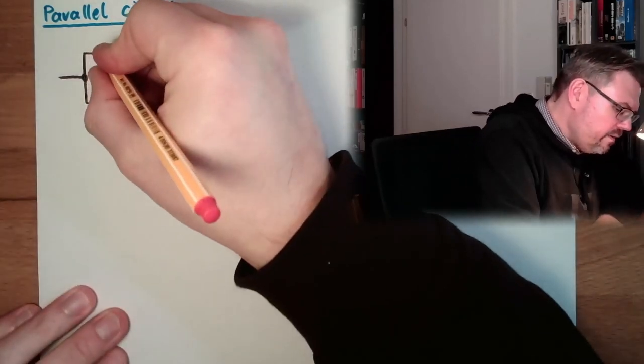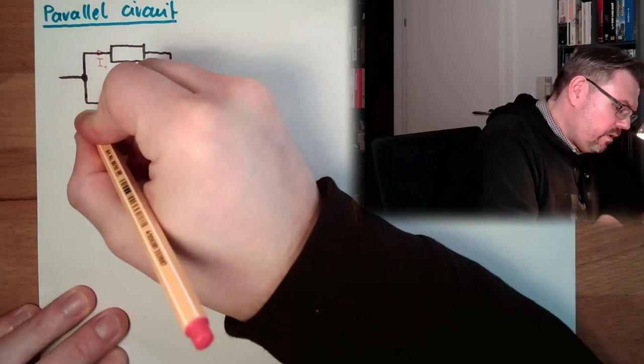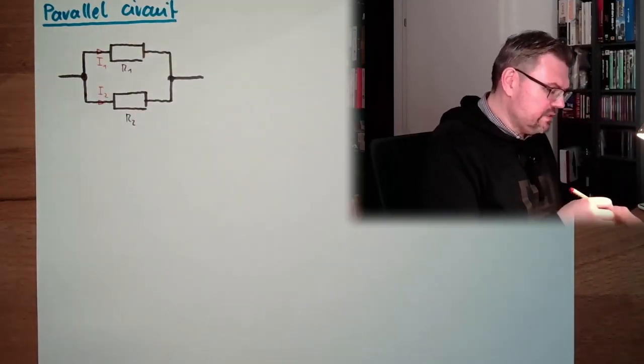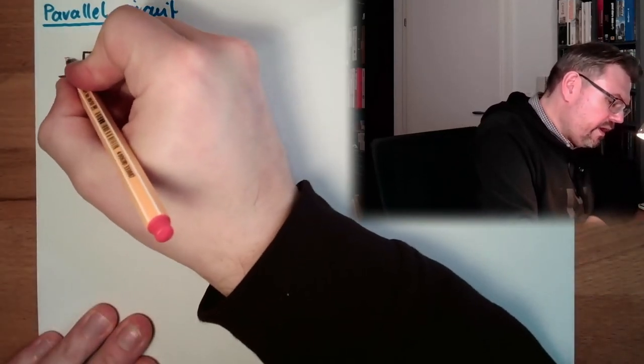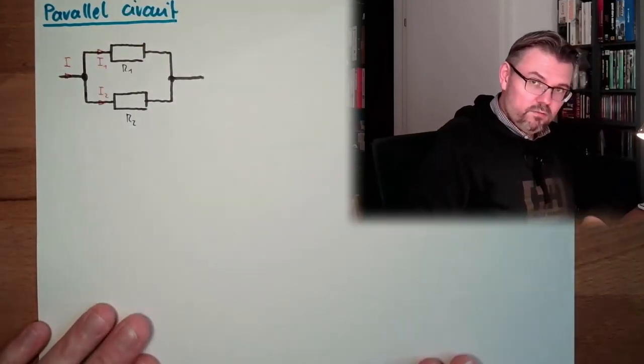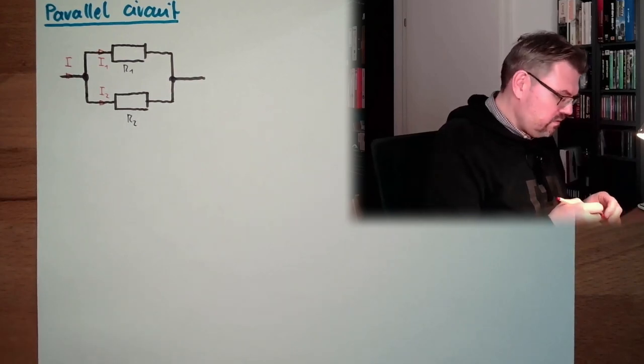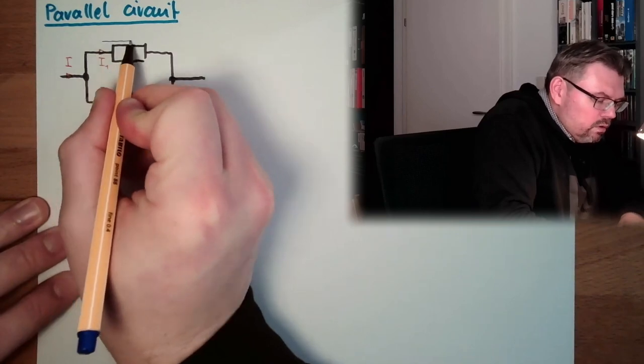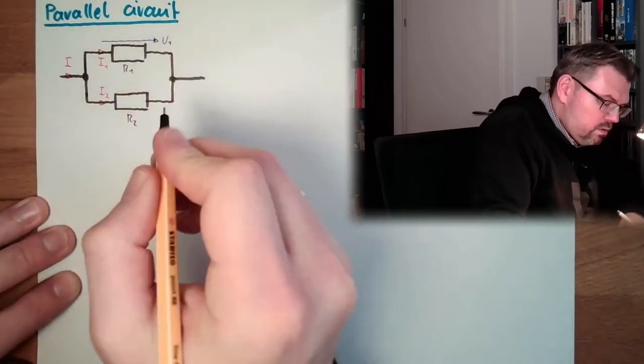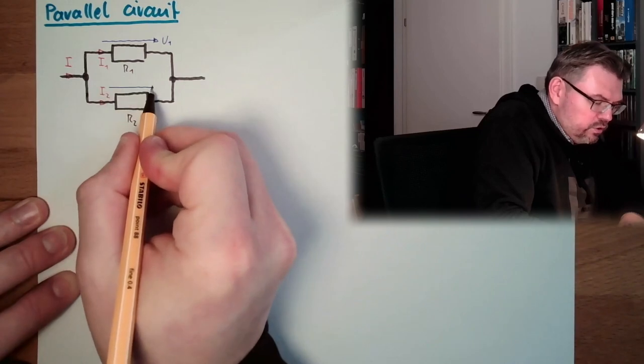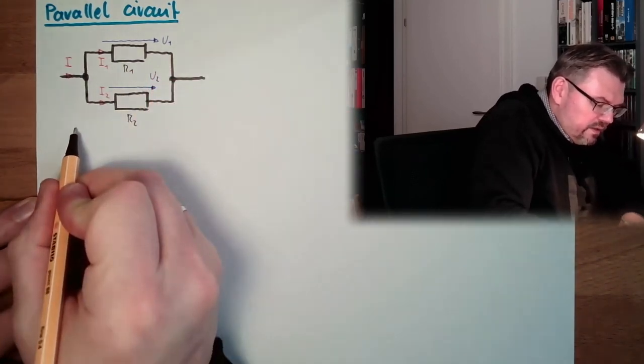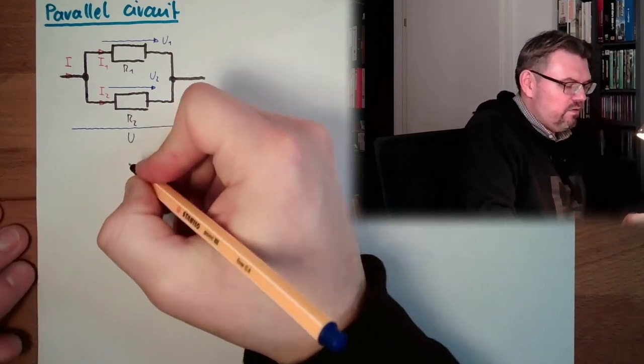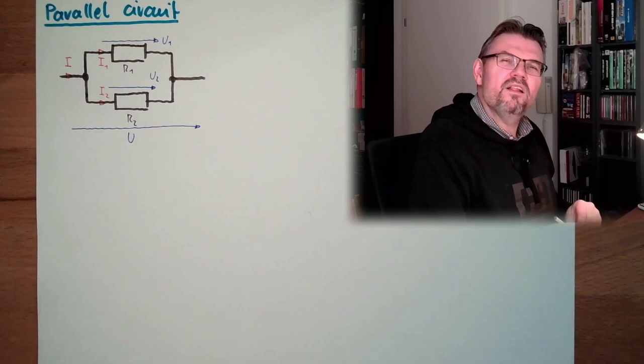We have here an I1, we have here an I2, the current through the two resistances. And here we have a voltage U1, here we have a voltage U2, and at the complete circuit we have a voltage U. This is our parallel circuit.